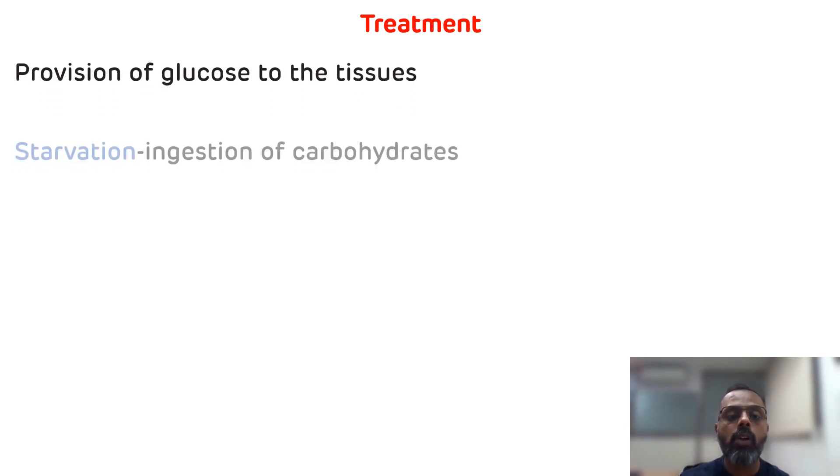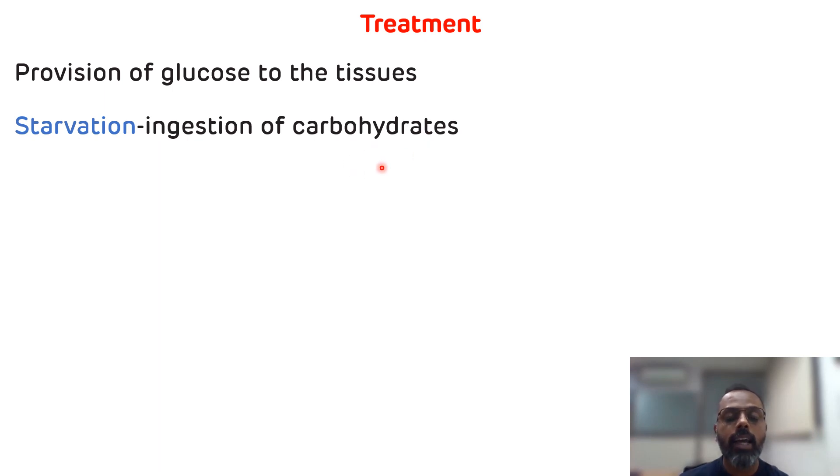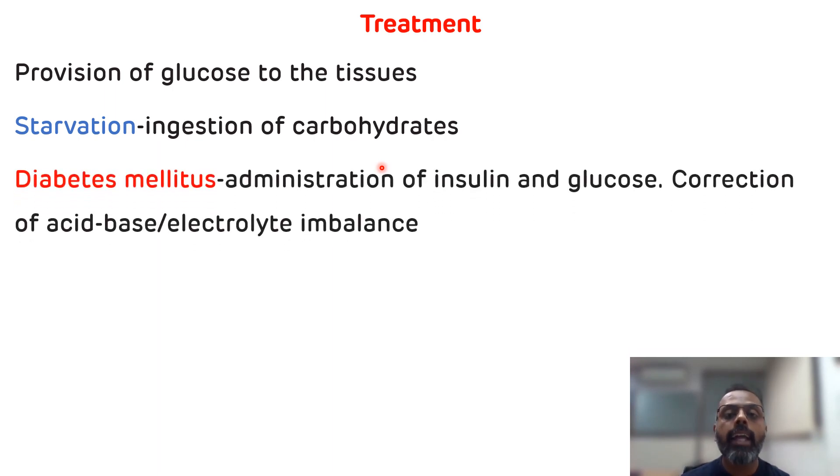Now, we will see how to treat ketosis. Treatment involves addressing causative factors. Ketosis occurs in starvation as well as in diabetes mellitus. In starvation, it involves ingestion of carbohydrates. In diabetes mellitus, it involves administration of insulin along with glucose. If there is any acid-base or electrolyte imbalance, then it needs to be corrected.